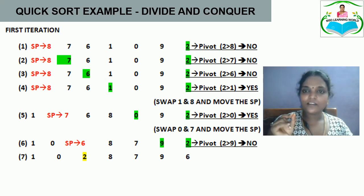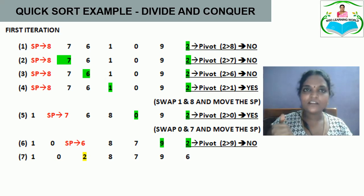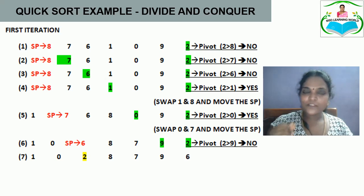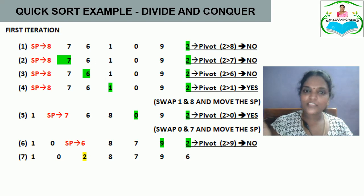We check: is 2 greater than 7? No. Moving to the next element: is 2 greater than 7? No. Next: is 2 greater than 6? No. Next: is 2 greater than 1? Yes. Since 1 is less than the pivot, we swap 1 with the element at the second pointer, which is 8. So 1 and 8 are swapped and the second pointer moves to the next element.